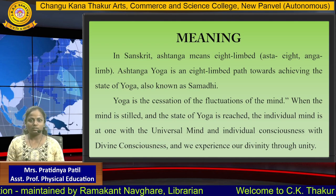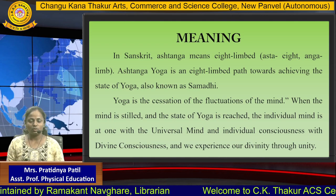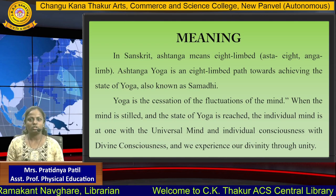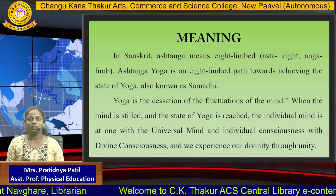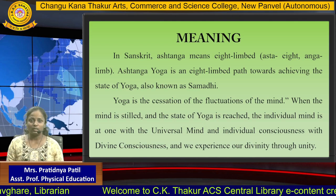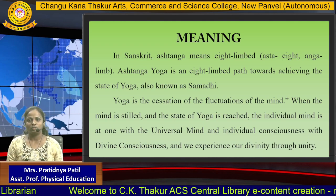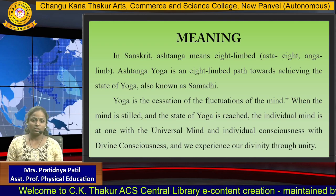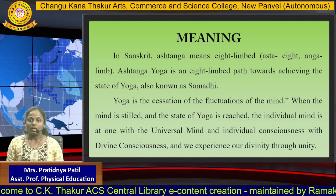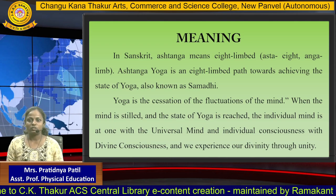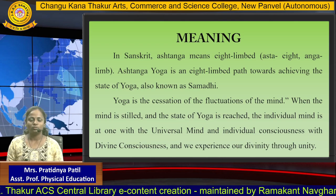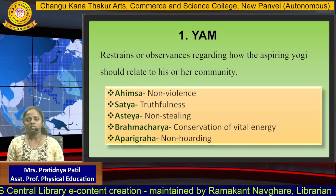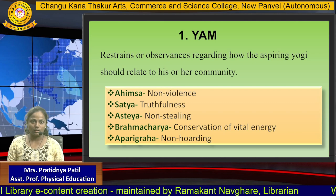Yoga is a cessation of fluctuations of the mind. When the mind is still and the state of Yoga is reached, the individual mind is at one with the universal mind and individual consciousness with the divine consciousness. And we experience our divinity through this unity. The first type of Ashtanga Yoga is YAM.